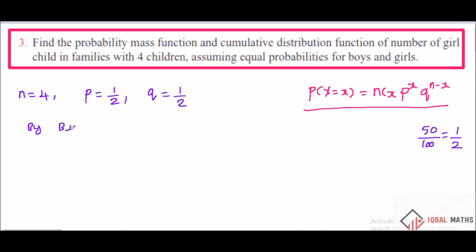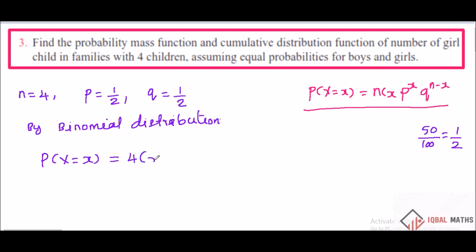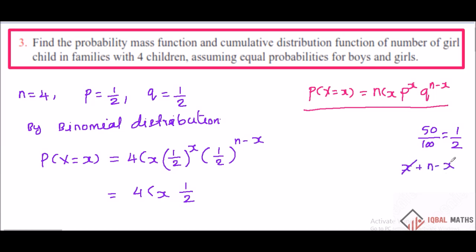By binomial distribution, since p equals 1 by 2 and q equals 1 by 2, the terms (1/2)^x and (1/2)^(n−x) combine to give (1/2)^n. So the formula simplifies. Let x define the number of girl children.